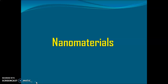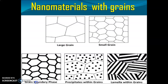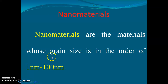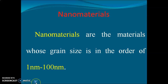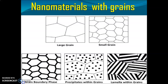Good morning. Today we are going to discuss nanoscience and nanomaterials. Nano refers to very small materials — specifically, nanomaterials are materials whose grain size is on the order of 1 to 100 nanometers, which is very small. In nanoscience, the grain size of materials has been significantly reduced.